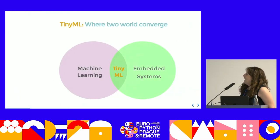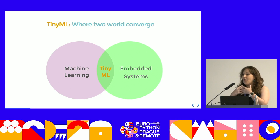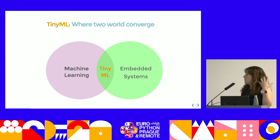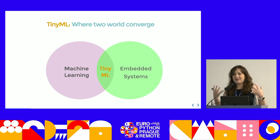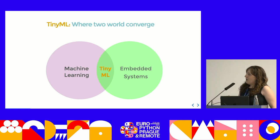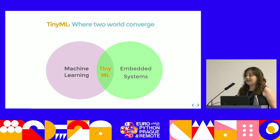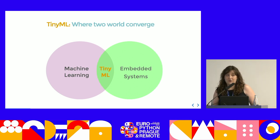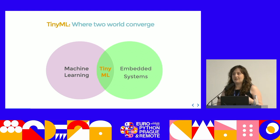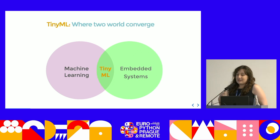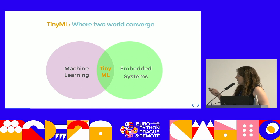What is TinyML? TinyML is an intersection of two great worlds — an intersection between data science and electronics, and specifically between machine learning and embedded systems. It's awesome because you have two great worlds working together. However, it can be challenging because you need knowledge of data science and also some knowledge of electronics, or you need two teams that can work together with good communication between them.